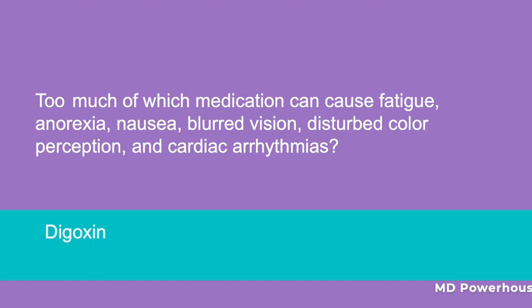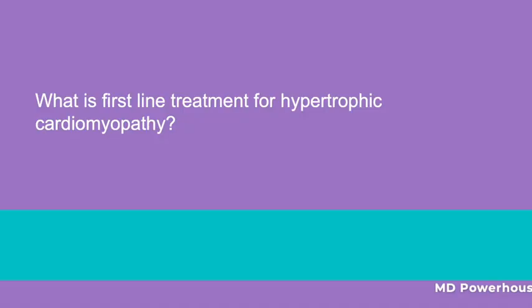What is the first-line treatment for hypertrophic cardiomyopathy? Beta-blockers or cardioselective calcium channel blockers.